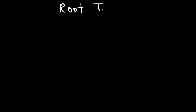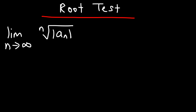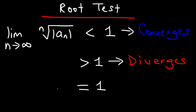Next up is the root test. You need to take the limit as n goes to infinity of the nth root of the absolute value of a sub n. If you get an answer that's less than 1, the series converges. If you get a value greater than 1 or it goes to infinity, the series diverges. If your answer is equal to 1, then like the ratio test, the root test will become inconclusive and you may need to use another test to determine if the series is going to converge or diverge.